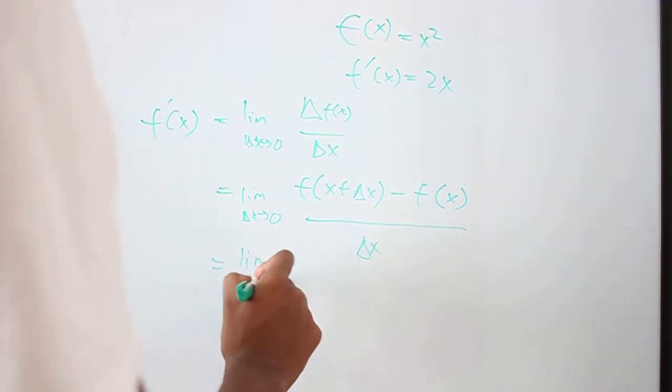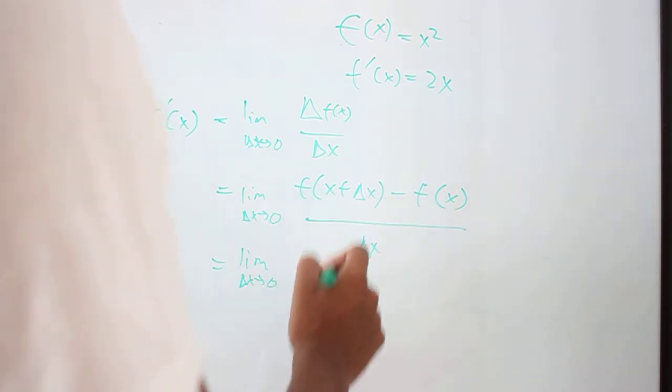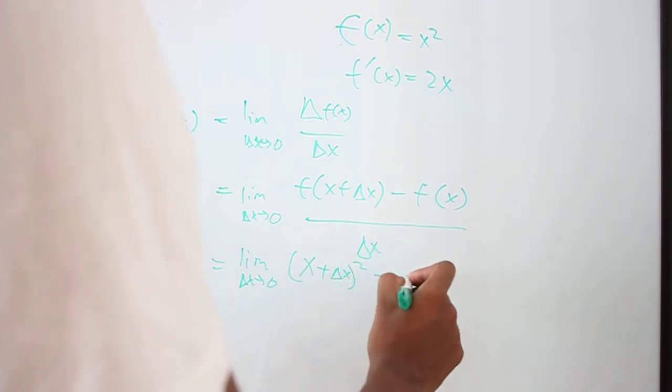So continuing on, you'd see that this is actually equals to (x + delta x) squared minus x squared.